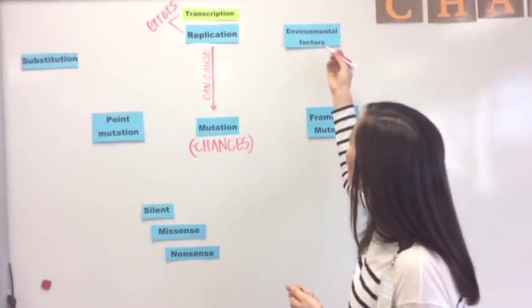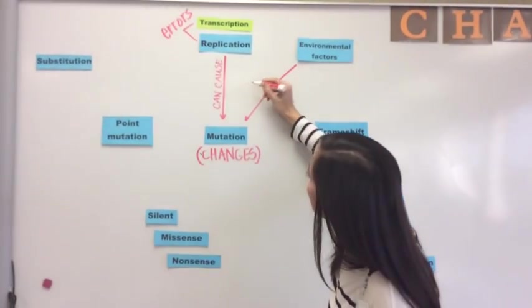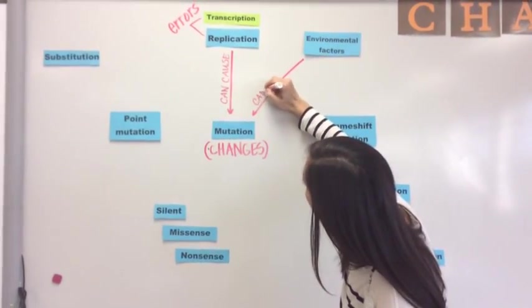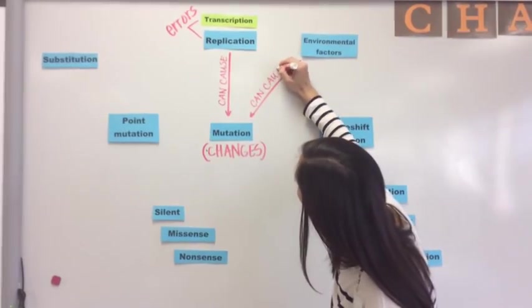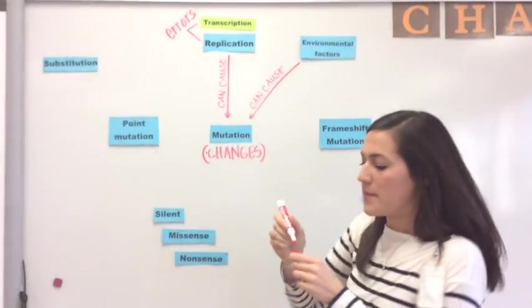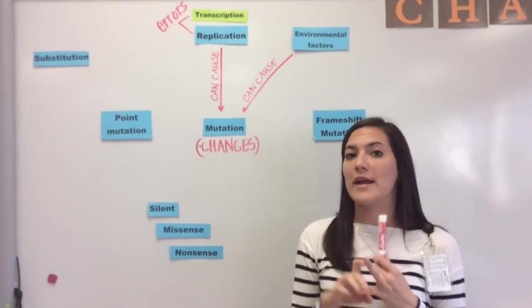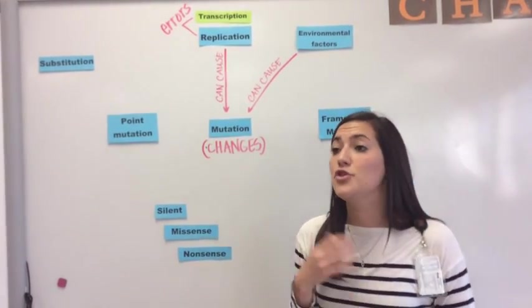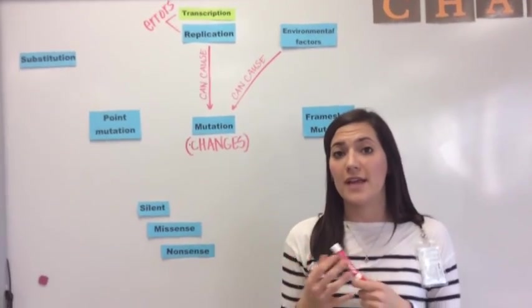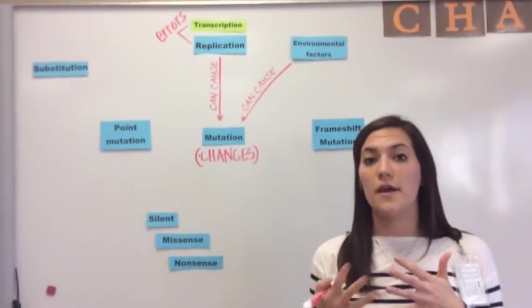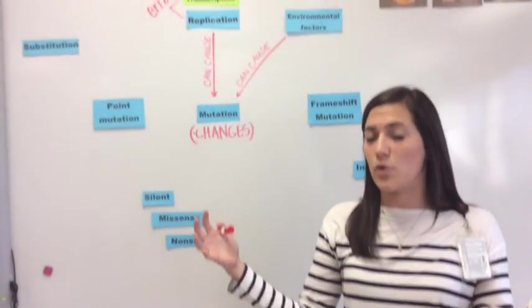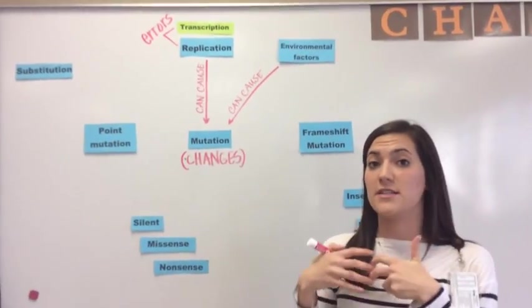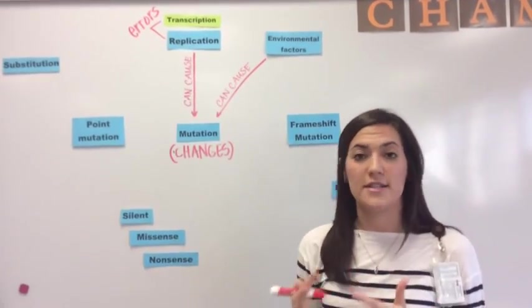One other way that our DNA can mutate is by environmental factors. So environmental factors are things like radiation, UV radiation from sunlight, nuclear radiation or power plants. Anything like that is strong enough to penetrate into our bodies outside of an organism and to affect the structure of our DNA and cause a mutation.